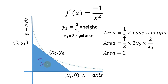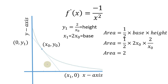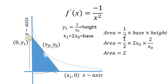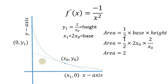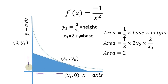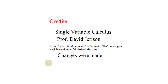The area of this triangle is 2, which is a constant. If we move the tangent line upward — that is, move the point x₀, y₀ upward — the base will become smaller and the height will become larger, but the area will remain the same: 2. Similarly, if we move the point downward, the base increases and the height decreases, but the area stays constant at 2. Thank you all.